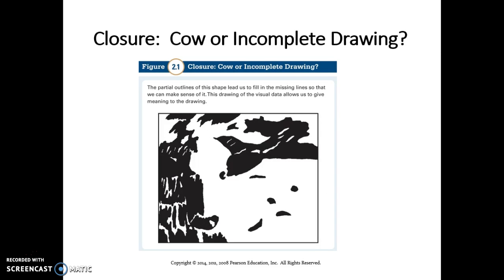For example, what do you see here? Maybe you see a cow, or maybe you see an incomplete drawing. I've tried over and over again, but I cannot see the cow in this picture. But maybe you do. Maybe your brain goes ahead and closes the picture. The same way, if you saw a circle with a small gap in it, your brain would say, well, that's just a circle with a gap in it, not a really large C.